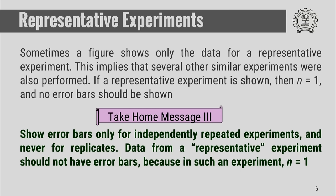Let us understand the meaning of a representative experiment and why you have to be careful while reporting error bars from such an experiment. Sometimes a figure shows only data from a representative experiment, which immediately implies that several other similar experiments were also performed. When a representative experiment is shown, n is equal to 1, and therefore you should not be showing any error bar. The third important take-home message is to show error bars only for independently repeated experiments, and never for replicates. Data from a representative experiment should not have error bars because the sample size is 1.